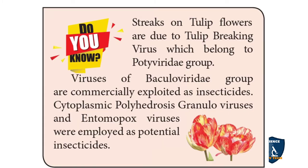And in a tulip flower, there are streaks — streak means a lines-like appearance which affects the colour of the flower. That is due to the tulip breaking virus. This virus belongs to the Potyviridae group. And the viruses of the Baculoviridae group are commercially used as insecticides, including cytoplasmic polyhedrosis, granule viruses, and entomopox virus.